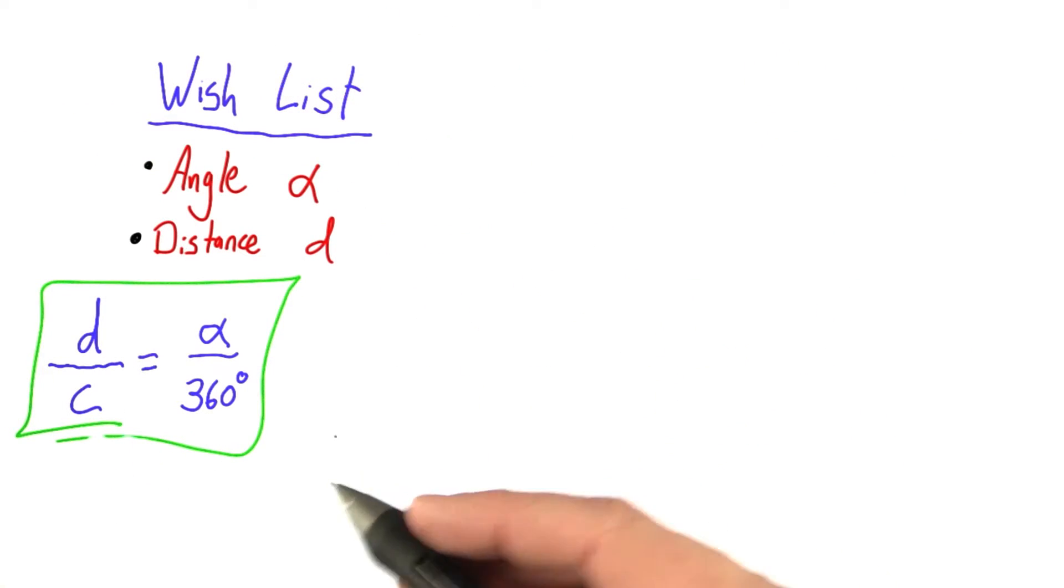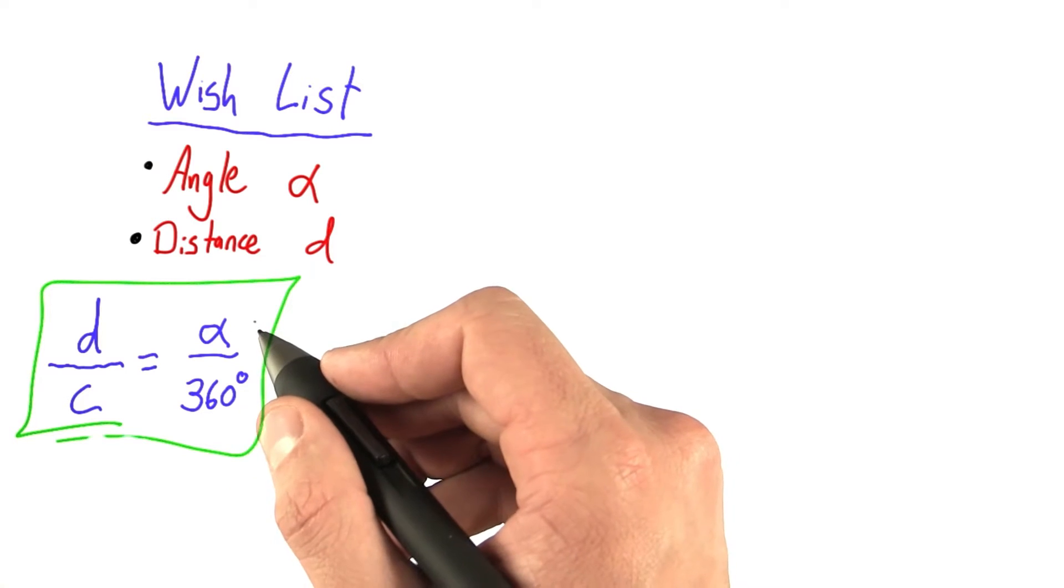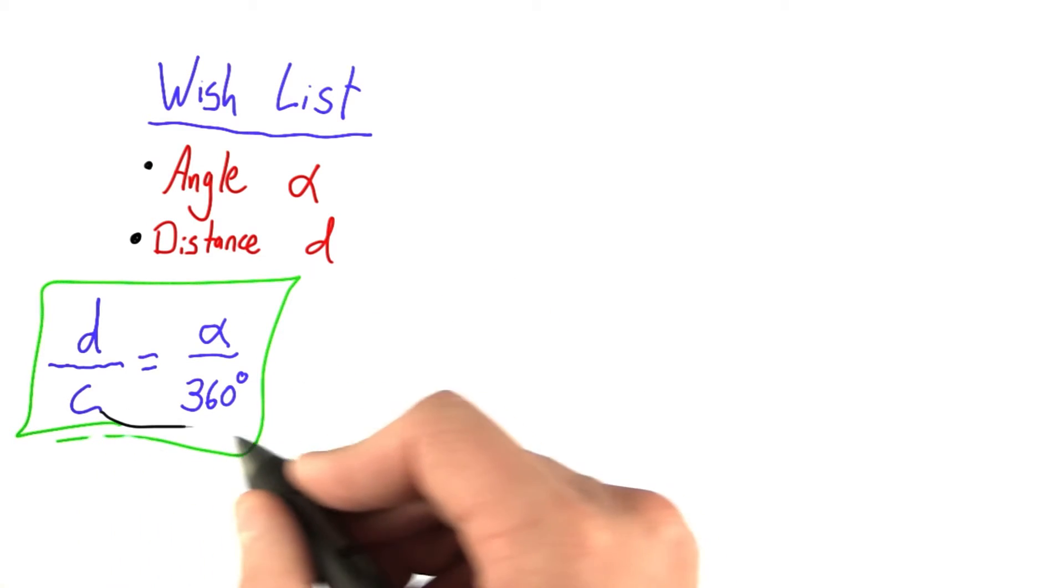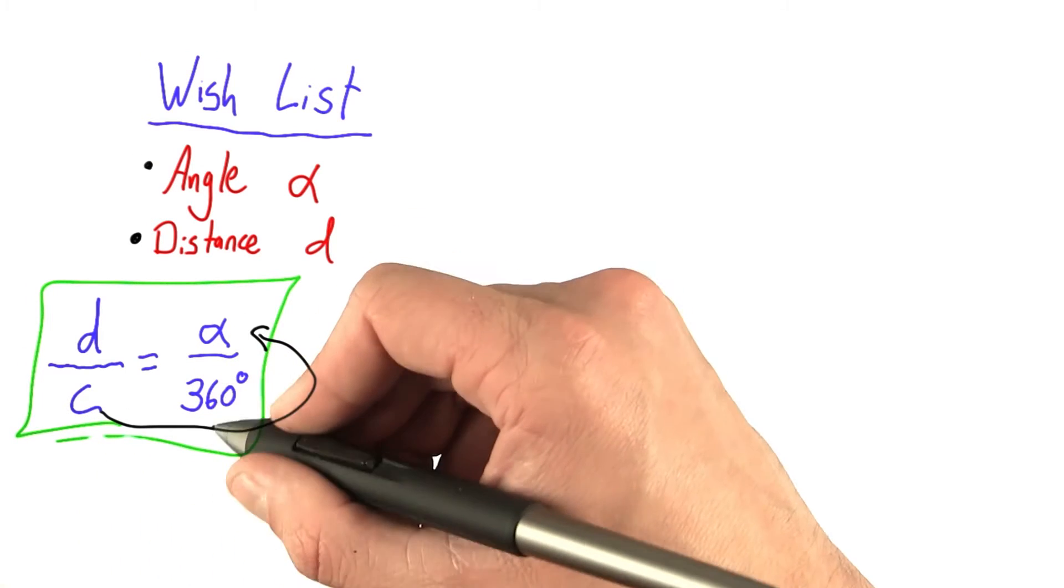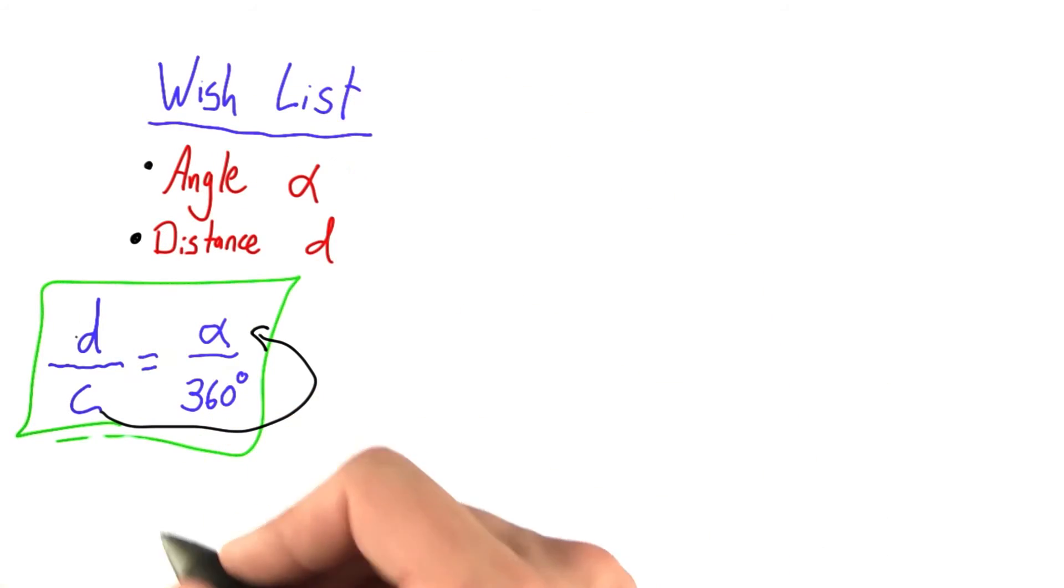Before we go any further, let's rewrite this equation. Let's solve it for c. I'm going to bring this c up here and bring these over, alpha and 360, over to the other side.